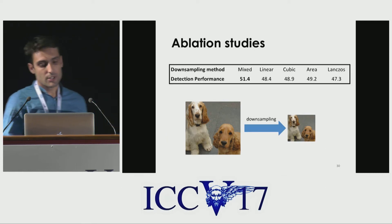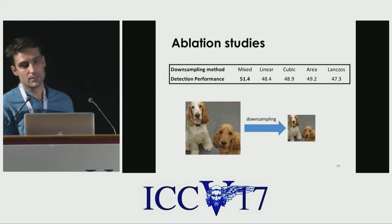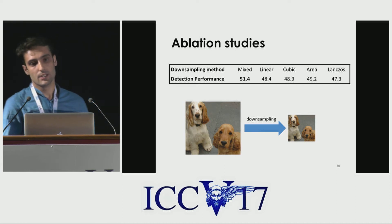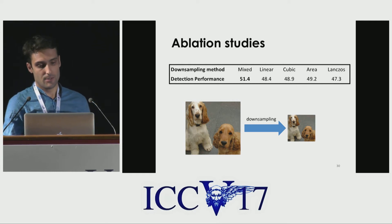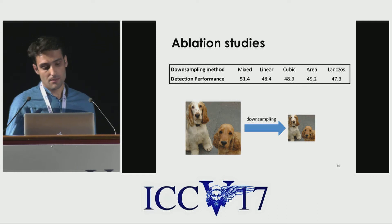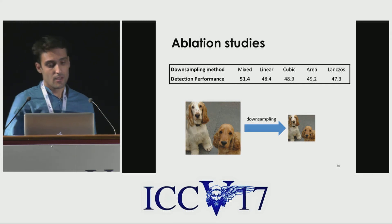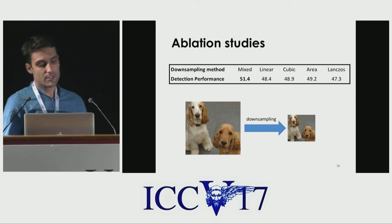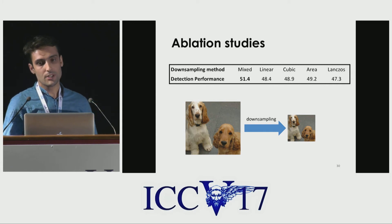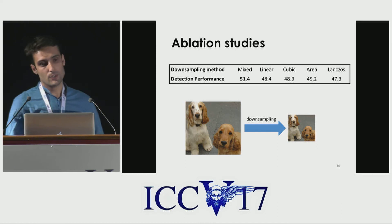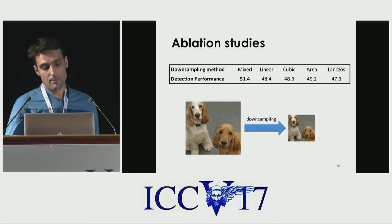Another shortcut is that the network can detect the downsampling method. Every downsampling method introduces a tiny pattern in the image. Surprisingly, we found the network can detect that tiny pattern and connect tiles to the original image using it. To prevent this, we confuse the network by randomly picking a downsampling method during training. The result when using this technique is significantly better than training with only one downsampling method.